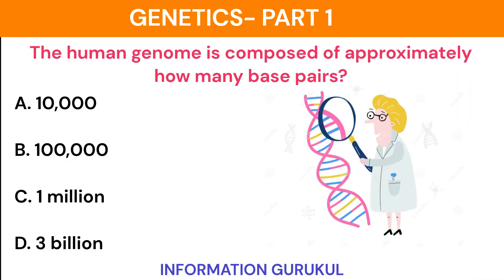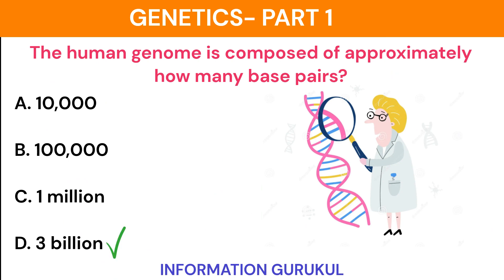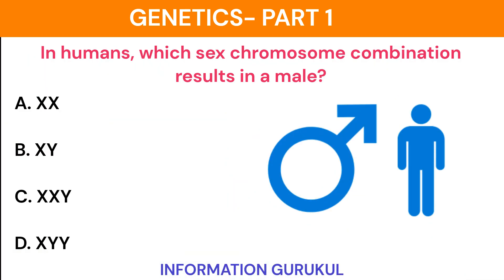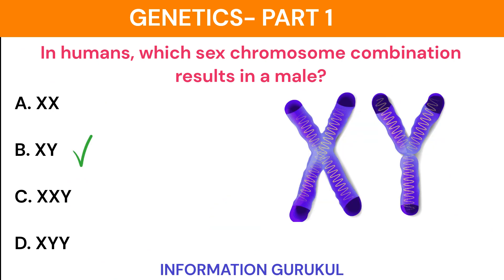The human genome is composed of approximately how many base pairs? 3 billion. In humans, which sex chromosome combination results in a male? XY.